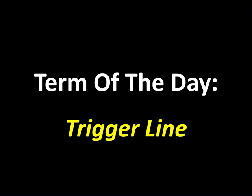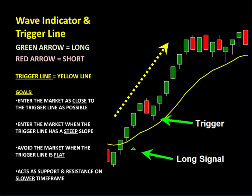The term of the day is the trigger line. The trigger line is a proprietary indicator available to our members only. On your charts, the green arrow is a long signal, the red arrow down is a short signal, and the yellow line is a dynamic level of support and resistance — that's our trigger line. It's always calculating.